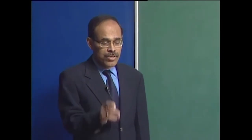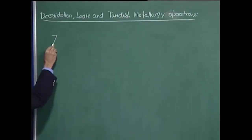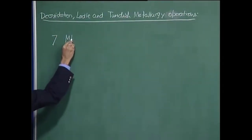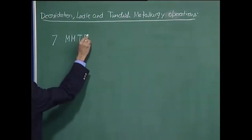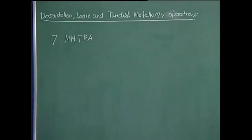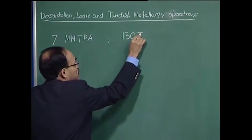The objective is to carry out a simple approximate deoxidation calculation and demonstrate how one can calculate the total amount of deoxidizer needed. Let us consider a plant which has an annual production of about 7 million metric tons per annum, and let us say that the size of a heat is about 130 tons.